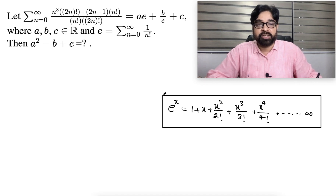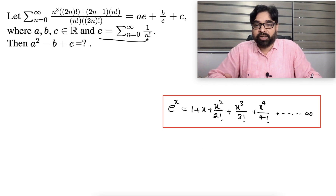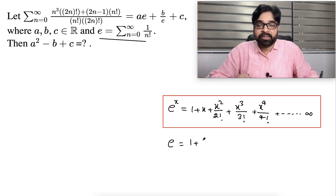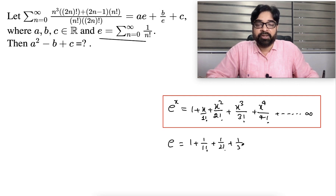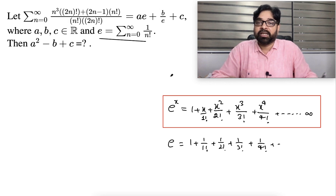The e^x series is very important and used in many places. If you put x = 1 on both sides, you get: e = 1/0! + 1/1! + 1/2! + 1/3! + 1/4! and so on. In fact expanding fully, 1/0! is 1, and 1/1! is also 1 — that's what this expression tells us.